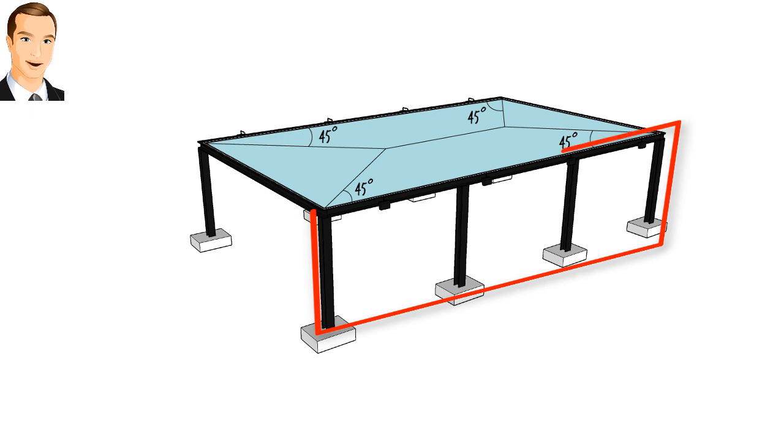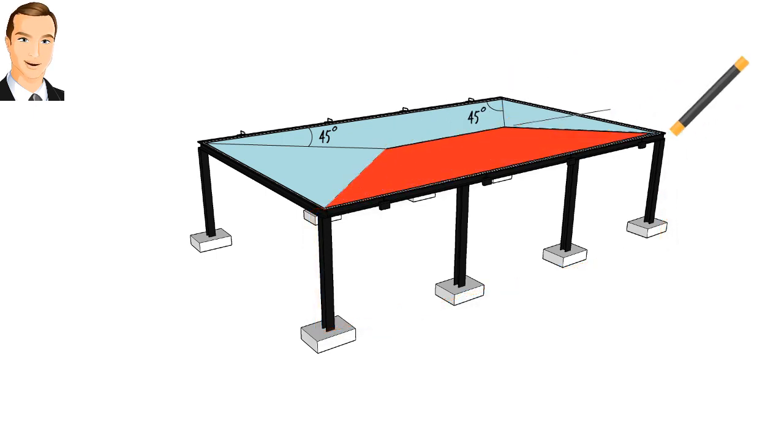Here, since we are focusing on this frame, we only need to take into consideration this tributary area. We need to transform the trapezoidal area load to a trapezoidal line load in order to place it on our long beam.